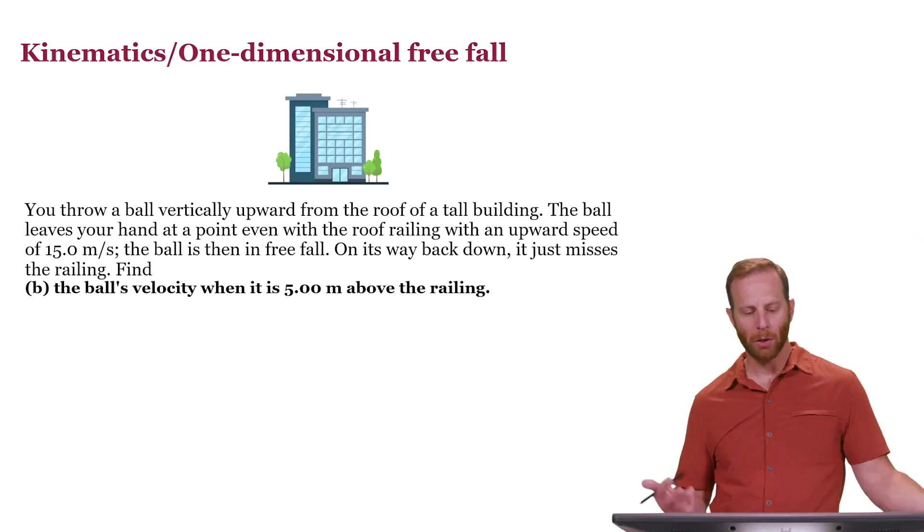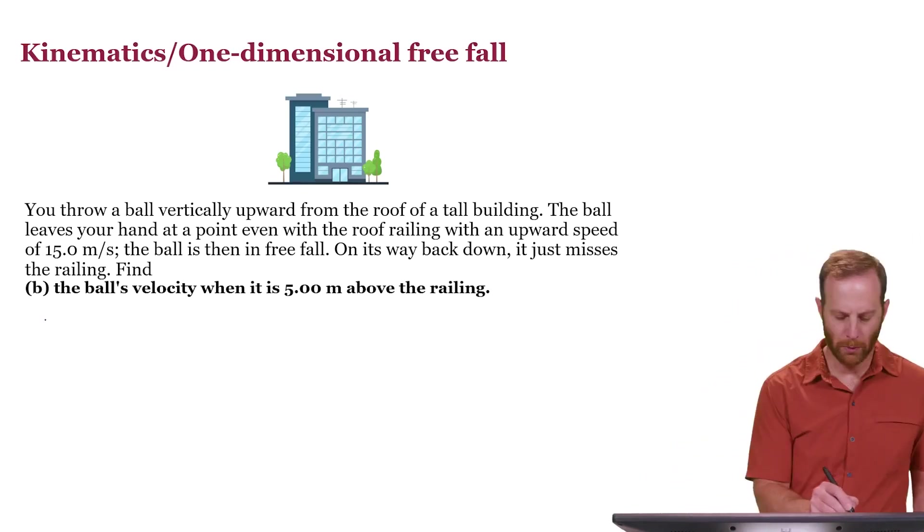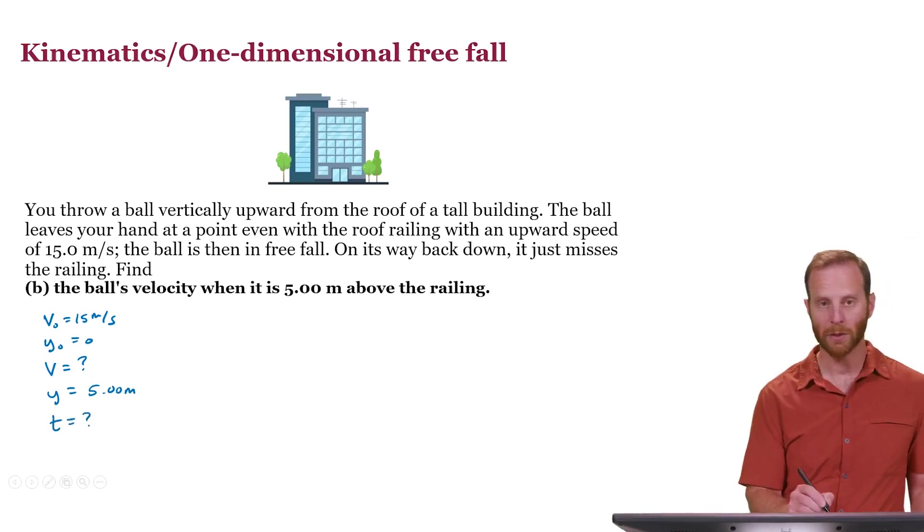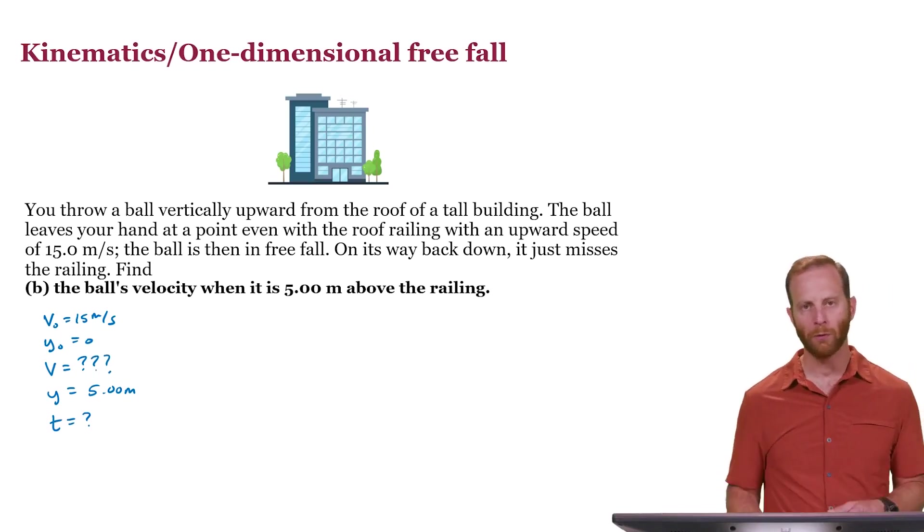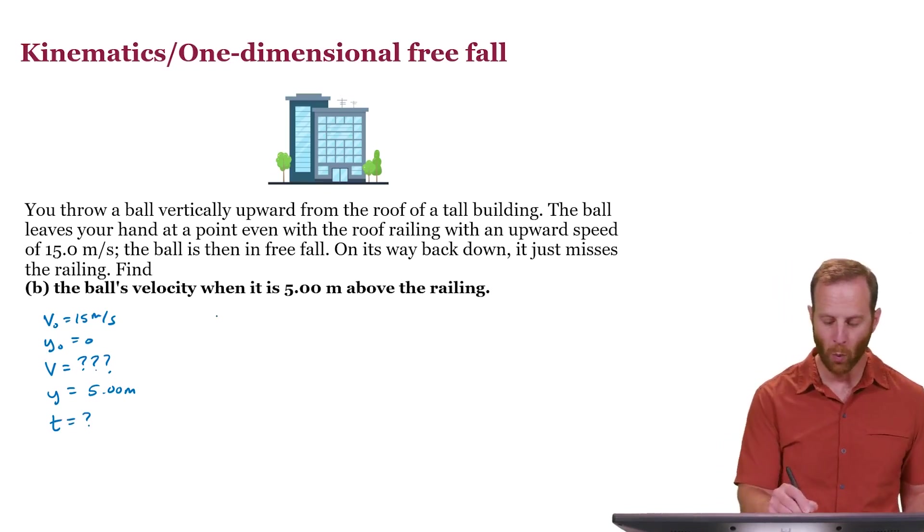What is the velocity when the ball is 5 meters above the railing? So here we have our knowns from before. But we want to know what the velocity is when the y position is 5 meters. We don't know what the velocity is. We actually don't know what the time is either, but we don't care. What we're really looking for is to figure out the velocity. So we're looking for an equation that will tell us what the velocity is if we don't know the time and we don't need the time. There's one equation that'll tell us that, and that was this third kinematic equation.